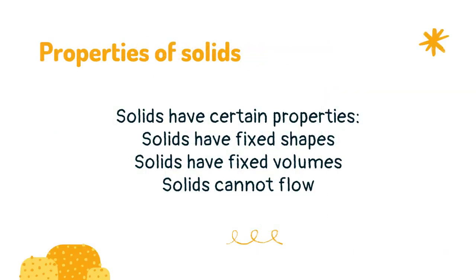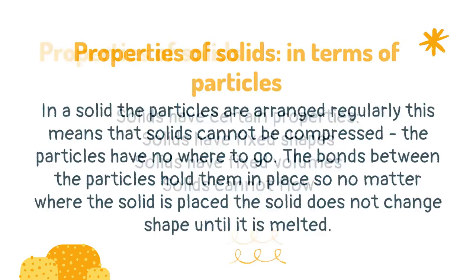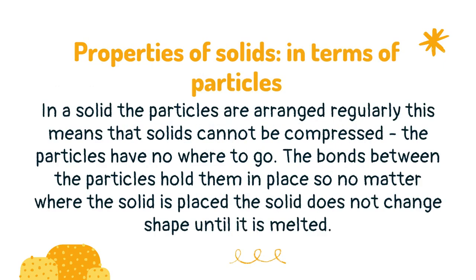Solids have certain properties. Solids have a fixed shape and a fixed volume. Solids cannot flow. In a solid the particles are arranged regularly, which means that solids cannot be compressed — the particles have nowhere to go. The bonds between the particles hold them in place, so no matter where the solid is placed it does not change shape until it is melted.